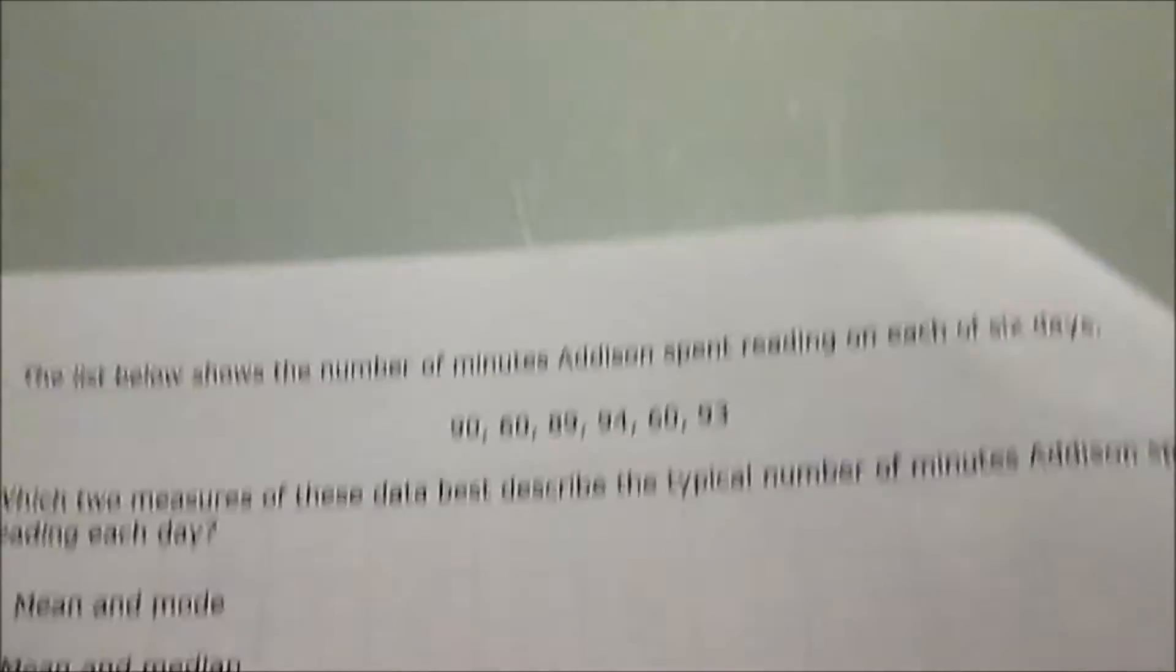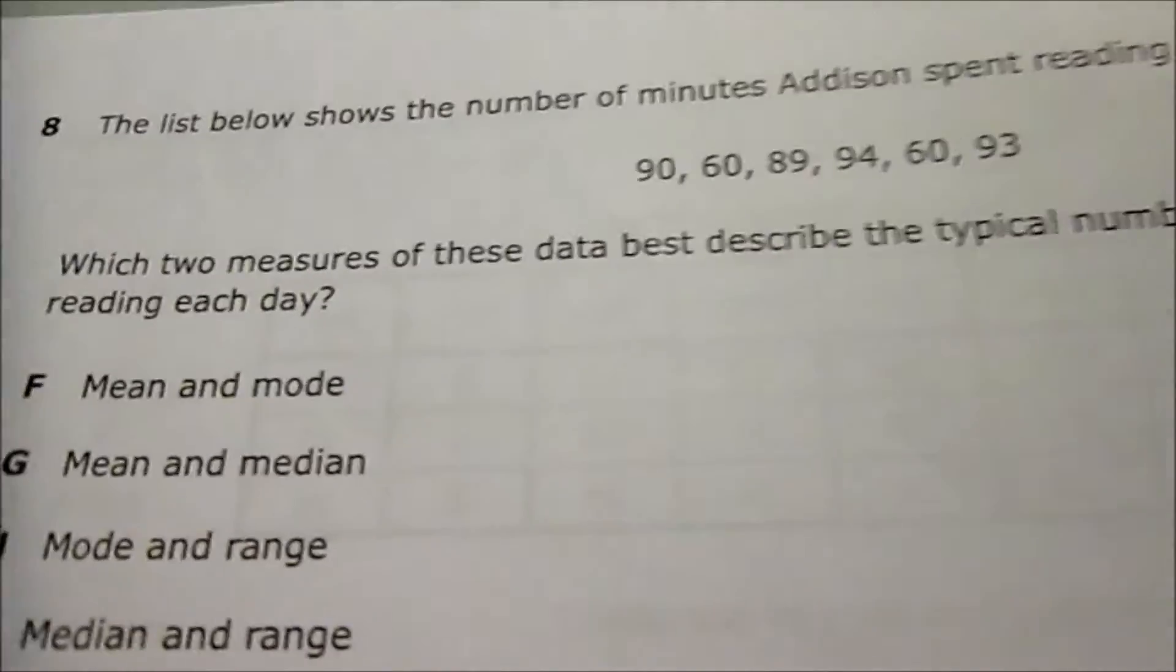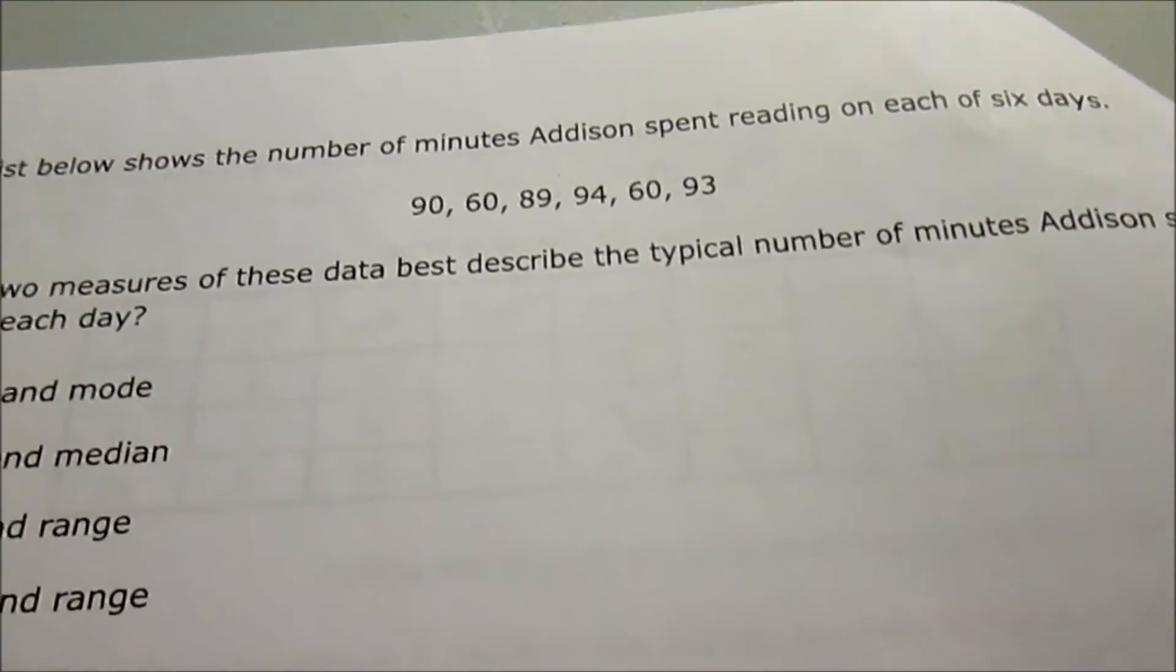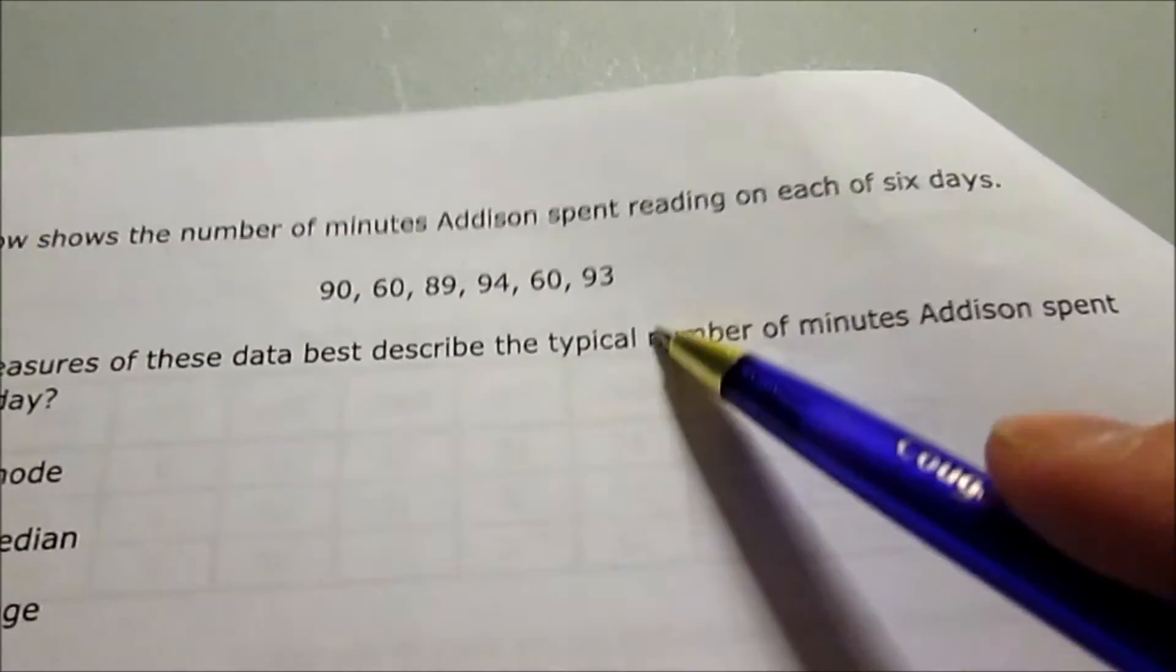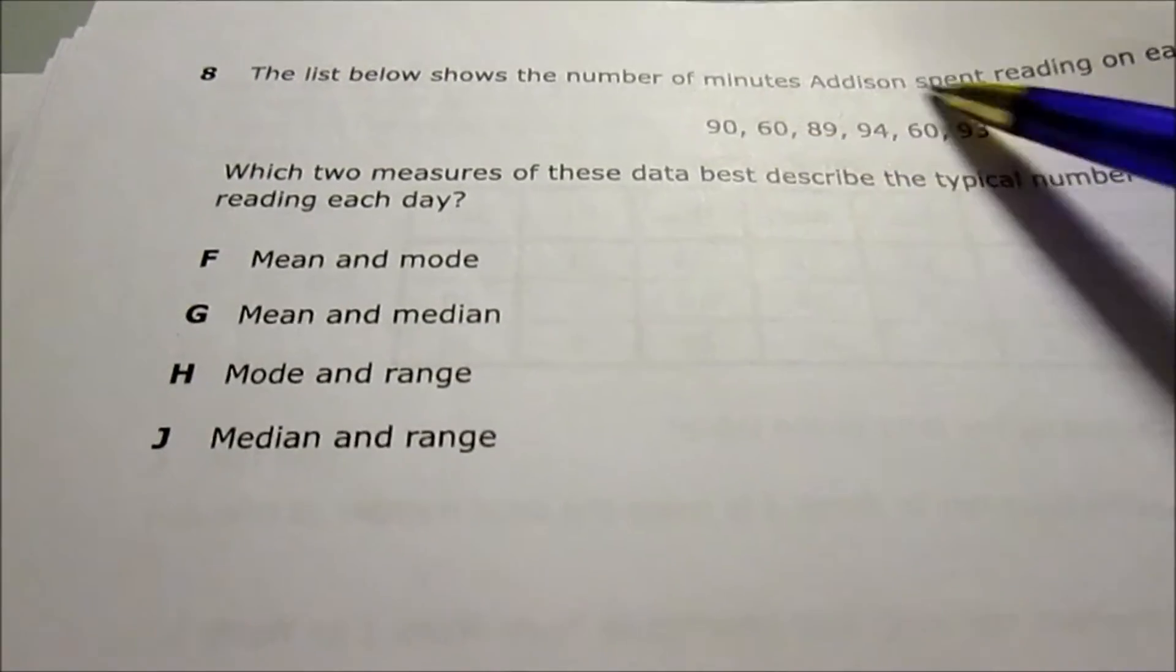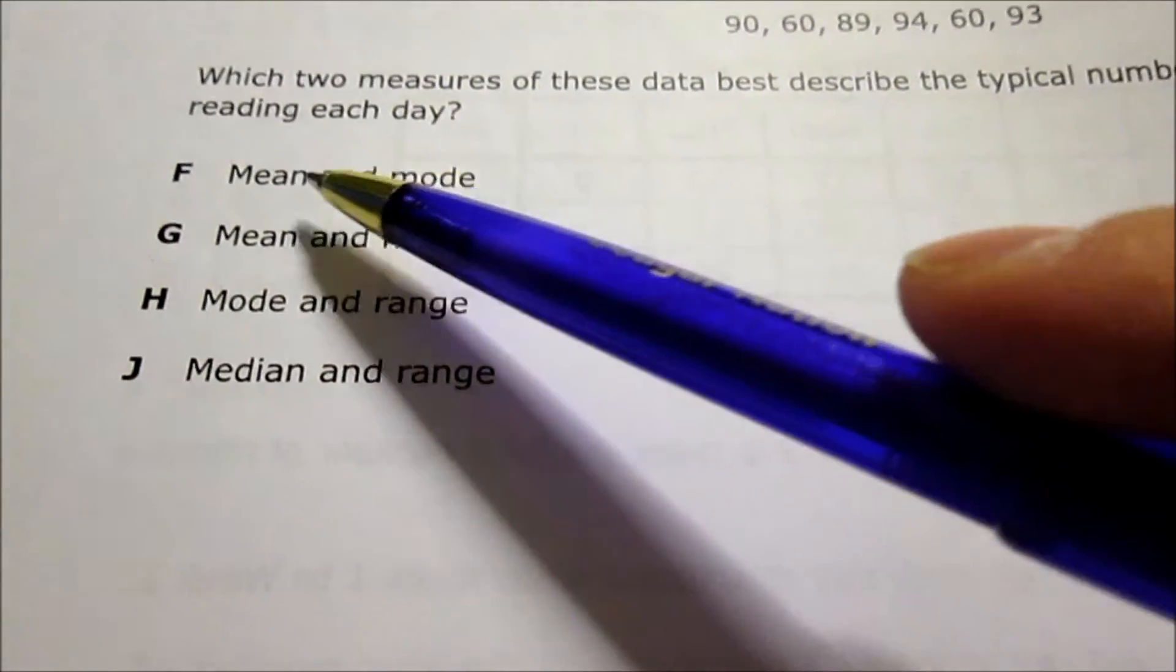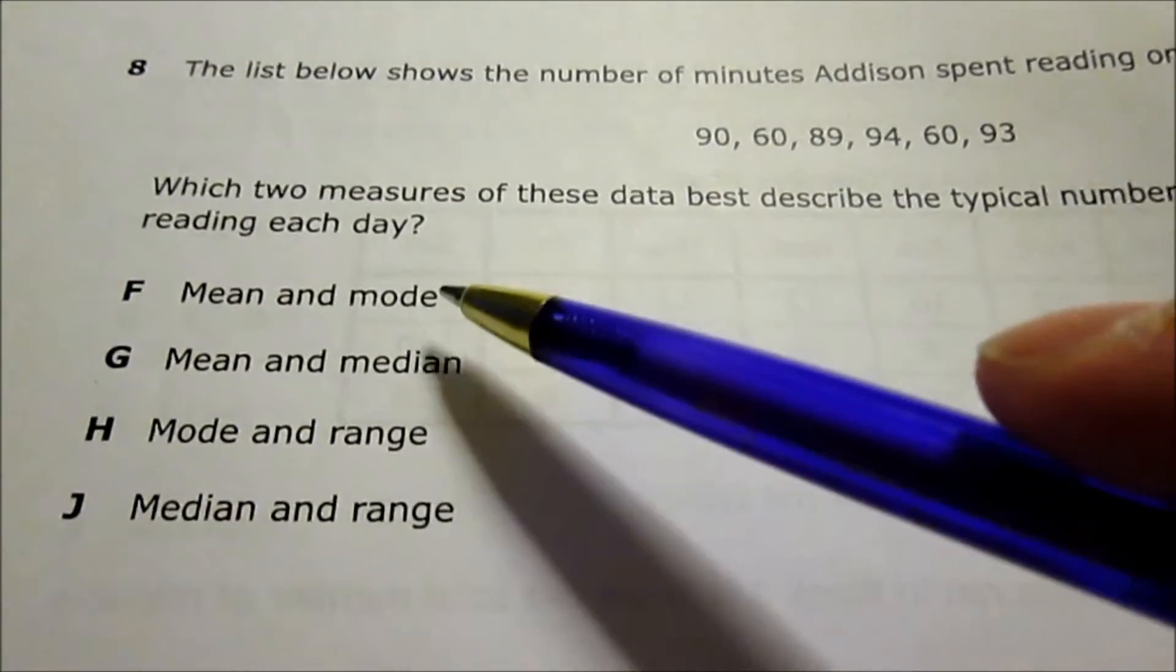Number 8: List below shows number of minutes Addison spent reading on each of the six days. Which two measures best describe the typical number of minutes Addison spent reading each day? Typical means how much per day. To find per day, you just take the average, which is called mean, and that leaves only F and G as answer choices.